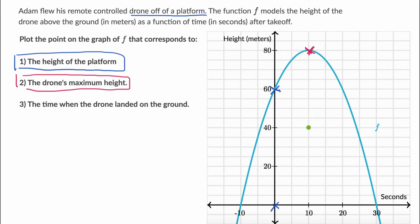And then last but not least, they say the time when the drone landed on the ground. Now we can assume that the ground is when the height of the drone is at zero meters. We can see that happens right over here, and that happens at time t equals 30 seconds. So we've just marked it off.